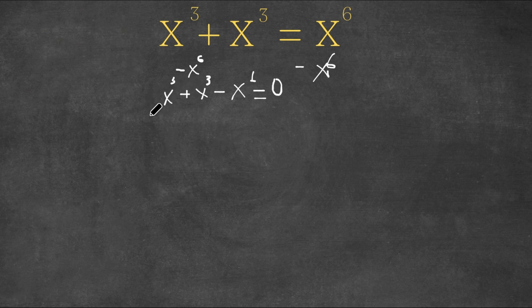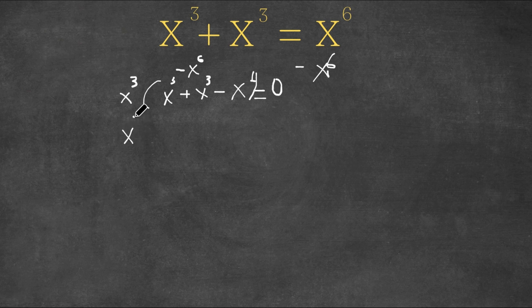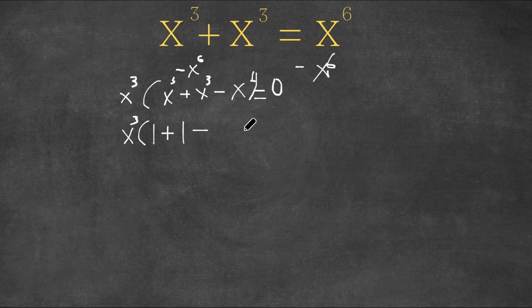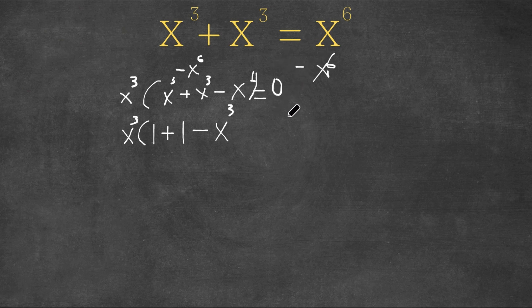Now what we're going to do is factor out x to the power of 3 from this expression. So if we factor out x to the power of 3, we get x to the power of 3 times — x to the power of 3 divided by x to the power of 3 is simply 1. So 1 plus 1 minus x to the power of 6 divided by x to the power of 3. That's going to be x to the power of 3, because x to the power of 6 divided by x to the power of 3 is x to the power of 6 minus 3. We're using the quotient rule of division of exponents, where we subtract exponents.